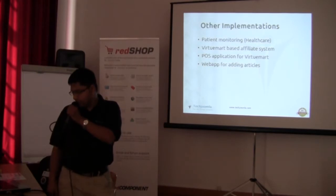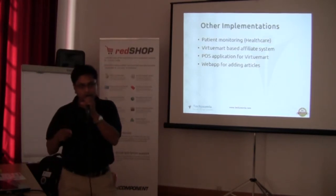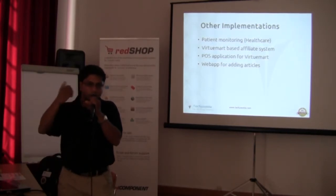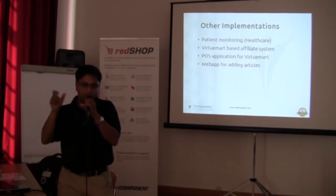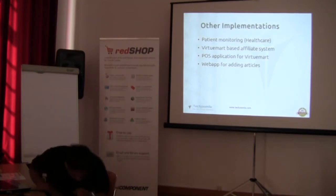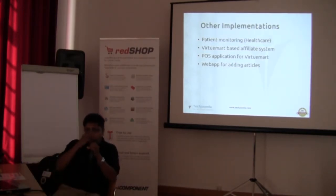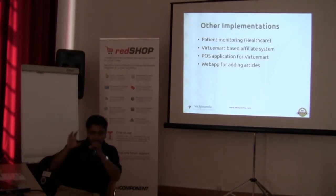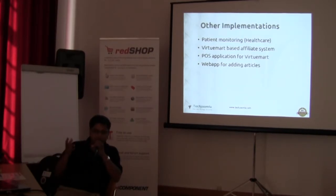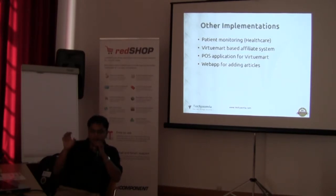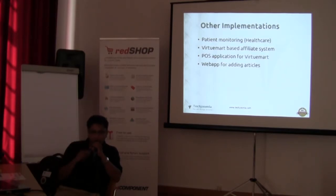A very interesting system we recently worked on is a VirtueMart-based affiliate system. It uses the search API to return search results for a keyword. We did this for a client who had about 90,000 products in his VirtueMart shop — small things like screws and pipes. He wanted to do drop shipping or affiliate shipping. We gave him the search API, which is being used by his affiliates to search for things. The affiliates create their own shops or demos and redirect back to the main VirtueMart shop, earning a commission based on the referring URL.